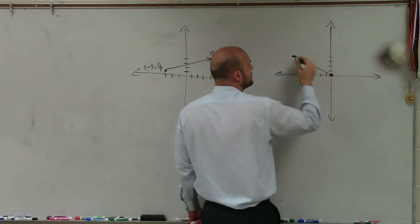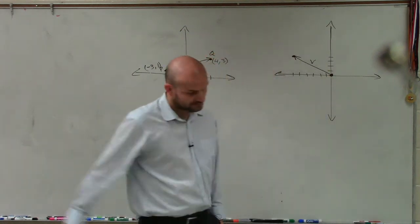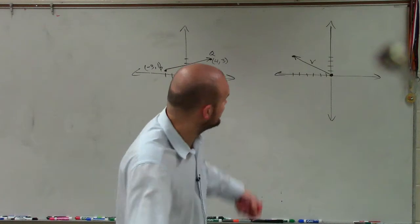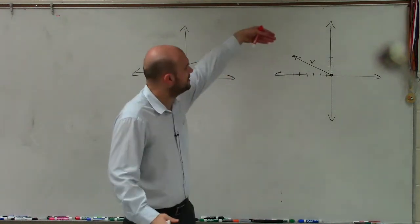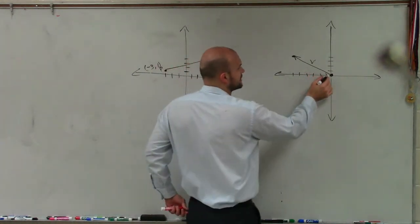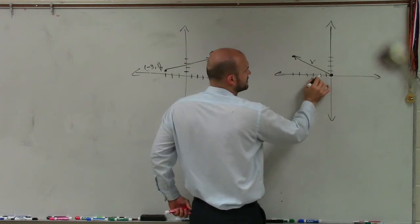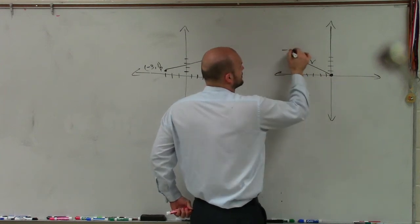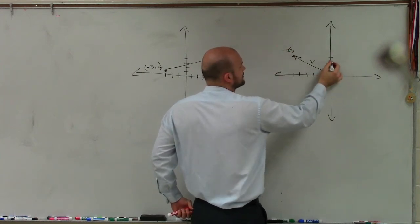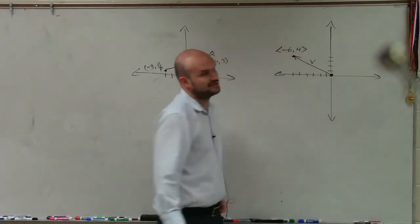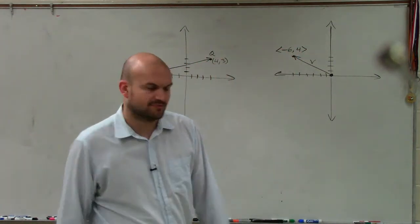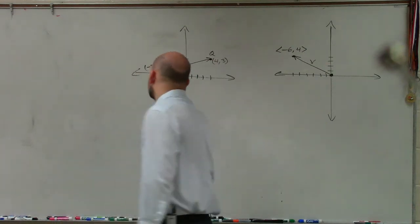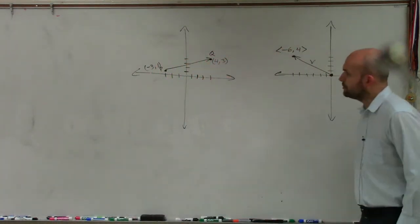And the reason it's in component form is because the initial point starts at 0, and then it ends at a terminal point negative 6, 4. Now remember, we represent vectors with the directed parentheses or pointed parentheses.